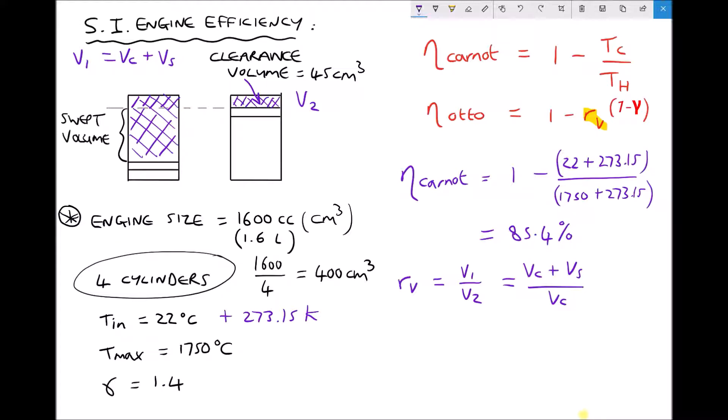As we have all our volumes in centimeters cubed, we can work in centimeters cubed. This is per cylinder. We have 400 plus 45, which is 445, over Vc which is just 45. Therefore the volumetric compression ratio of our spark ignition engine is 9.89. That's a ratio so it doesn't have any units.